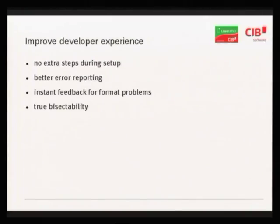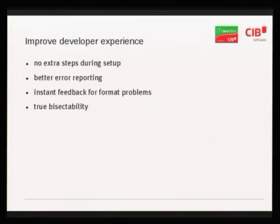Developer experience: no extra steps, so you just call autogen and then call make and it works. Also, error reporting — when those validators say 'not valid,' you probably want to know what the problem is, not just that there is a problem but also where it is. At least the line and column number, and ideally something that modern C++ compilers do: output part of the input with a pointer indicating 'there's the problem.'